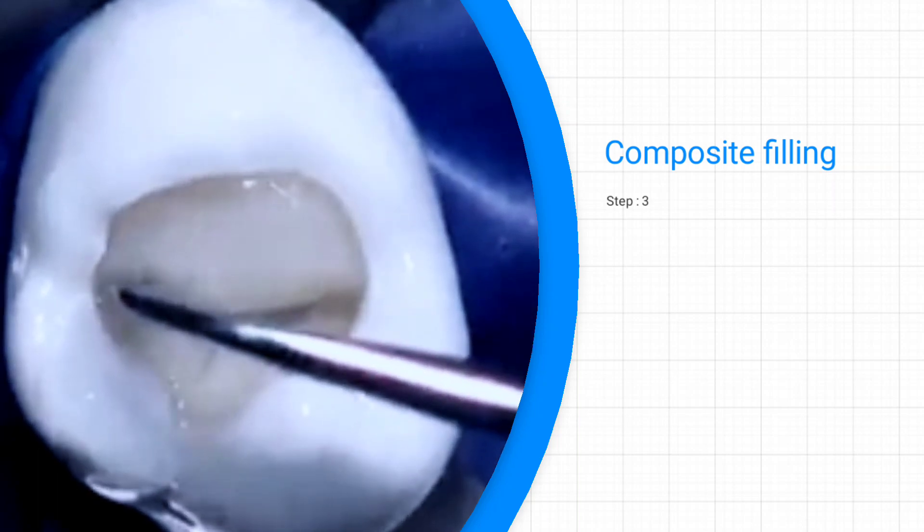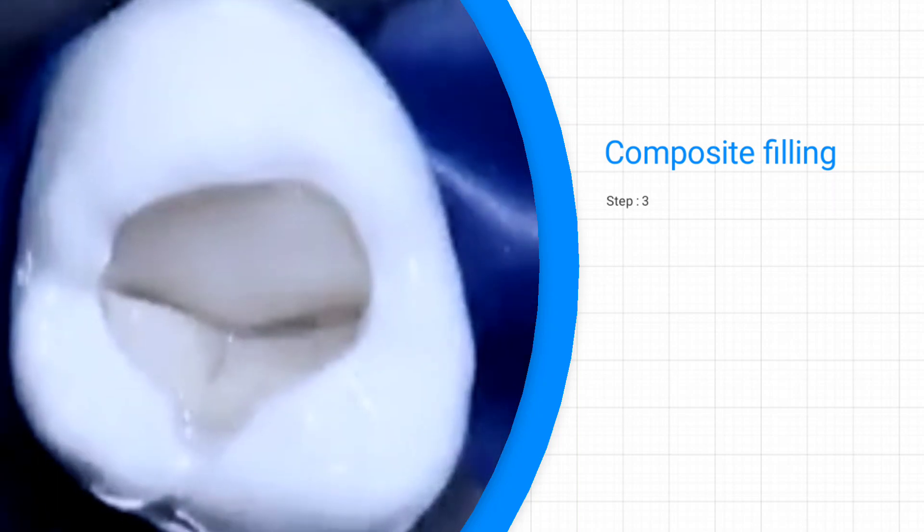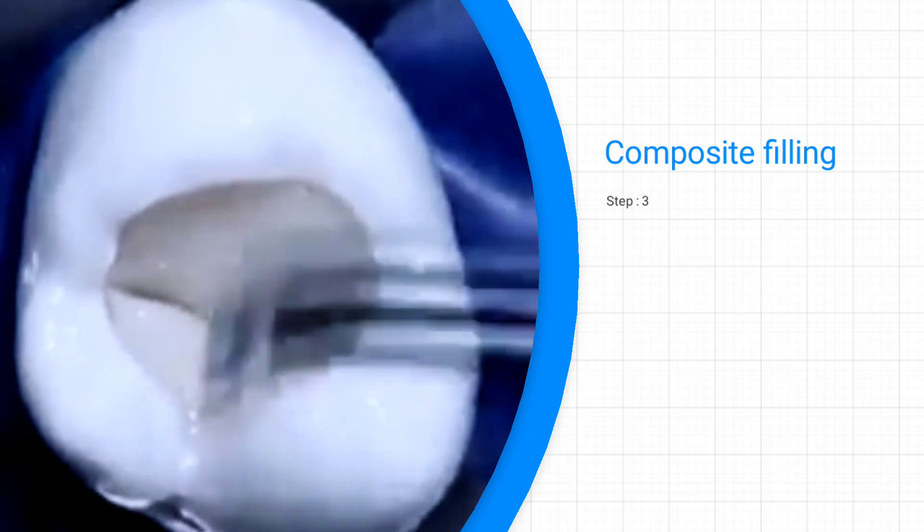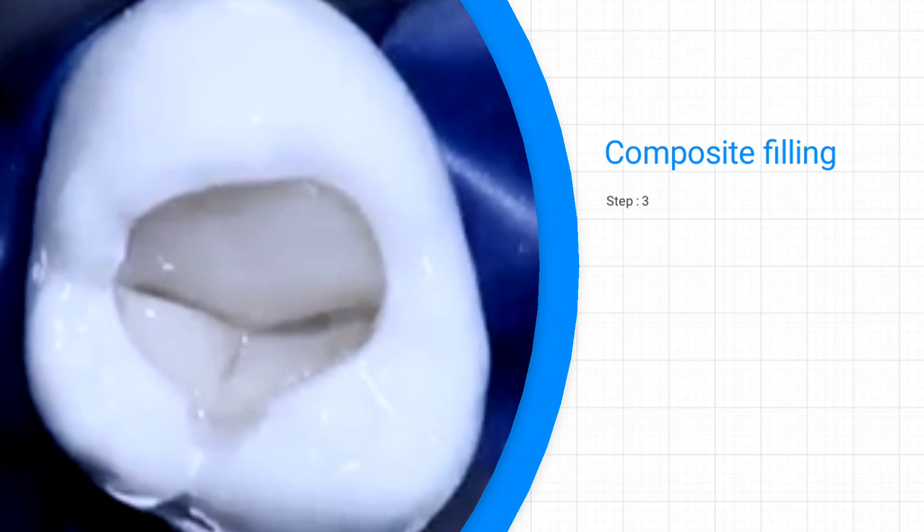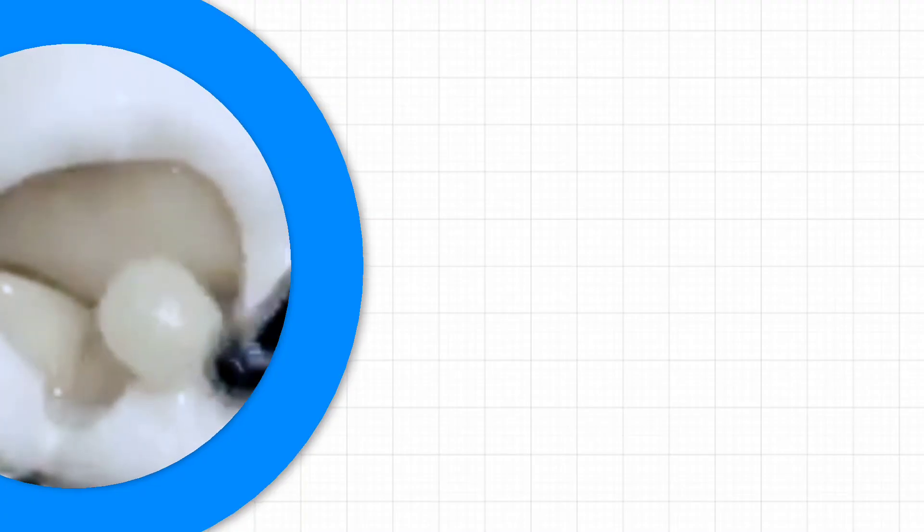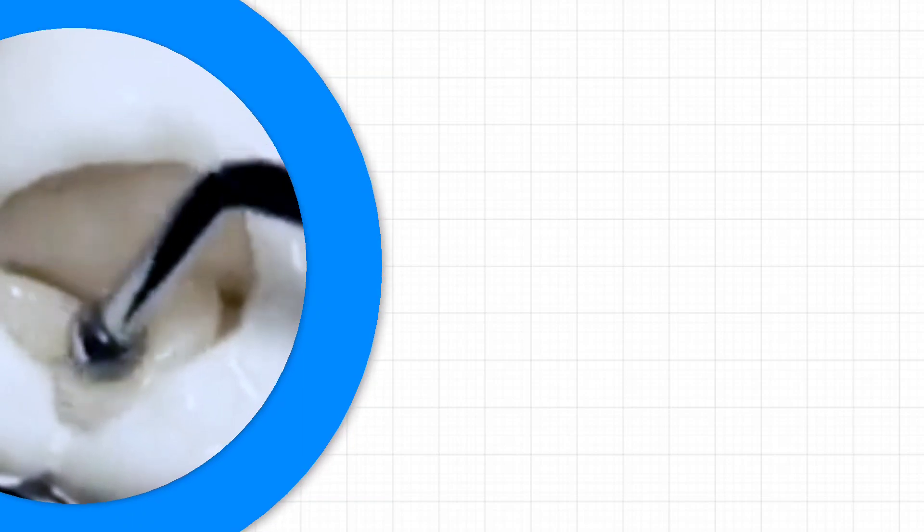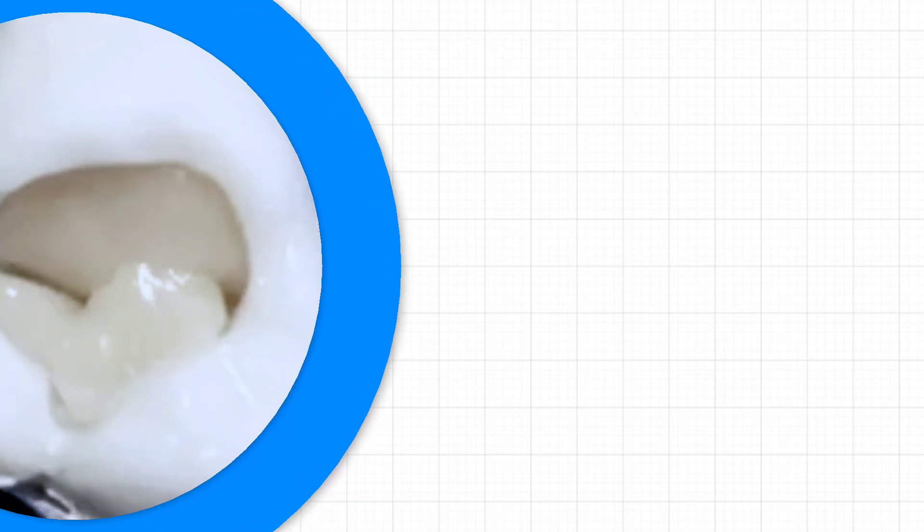Apply composite in layers, so each layer attaches to the bonding agent. The composite filling looks like and feels like a putty. Apply a flat layer into place, and after this, expose to the curing light for about 10 to 40 seconds.